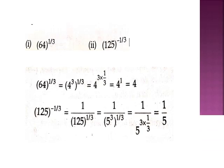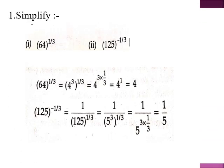Let's see some examples. First, we will simplify 64 raised to the power 1 by 3. Now, 64 is nothing but 4 cubed. So we write 4 cube whole raised to the power 1 by 3, and using power of power we multiply both powers: 3 into 1 by 3. The 3s cancel, giving 4 raised to the power 1, which equals 4.